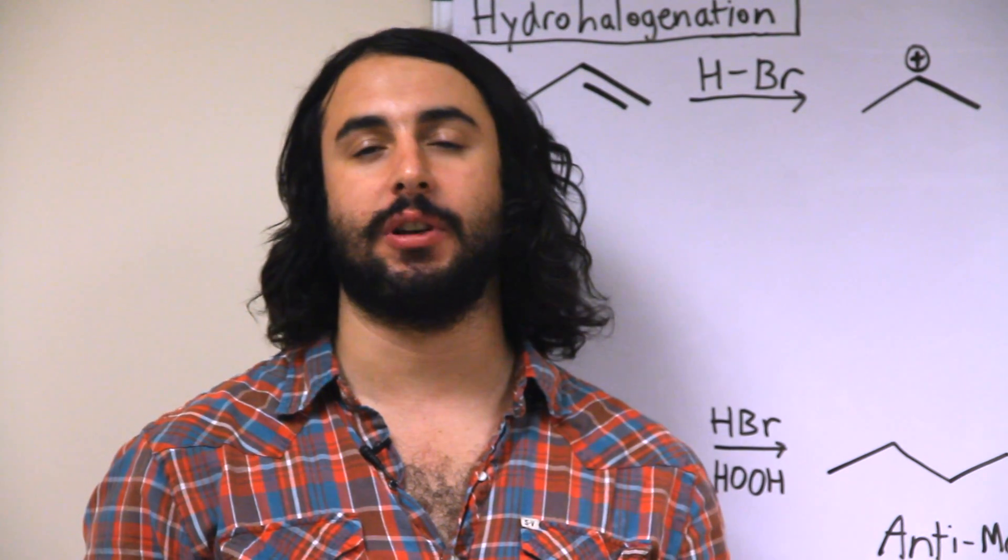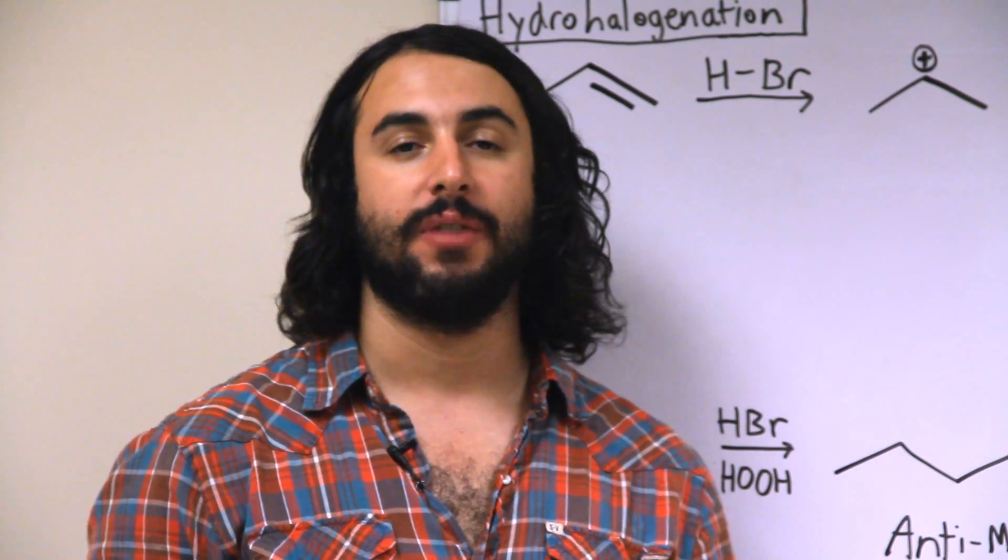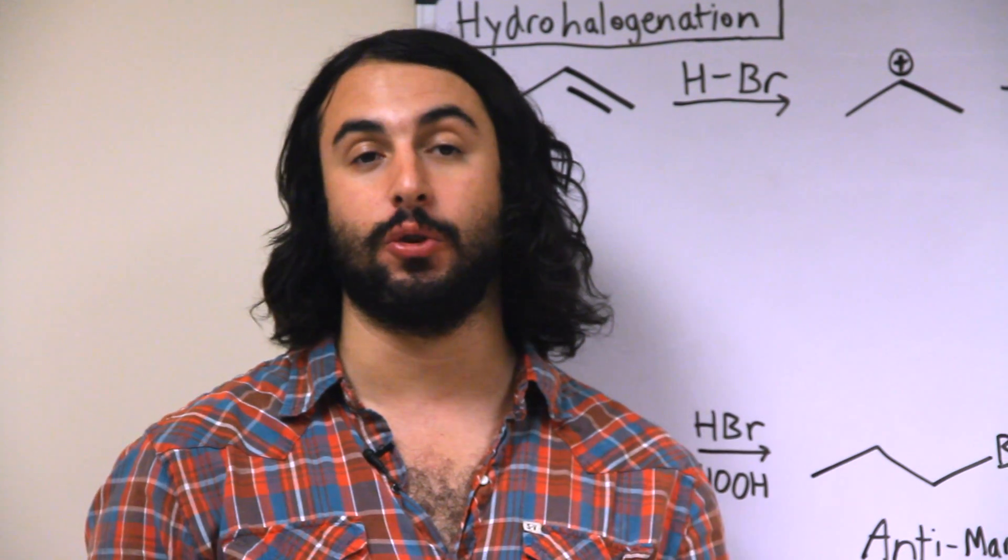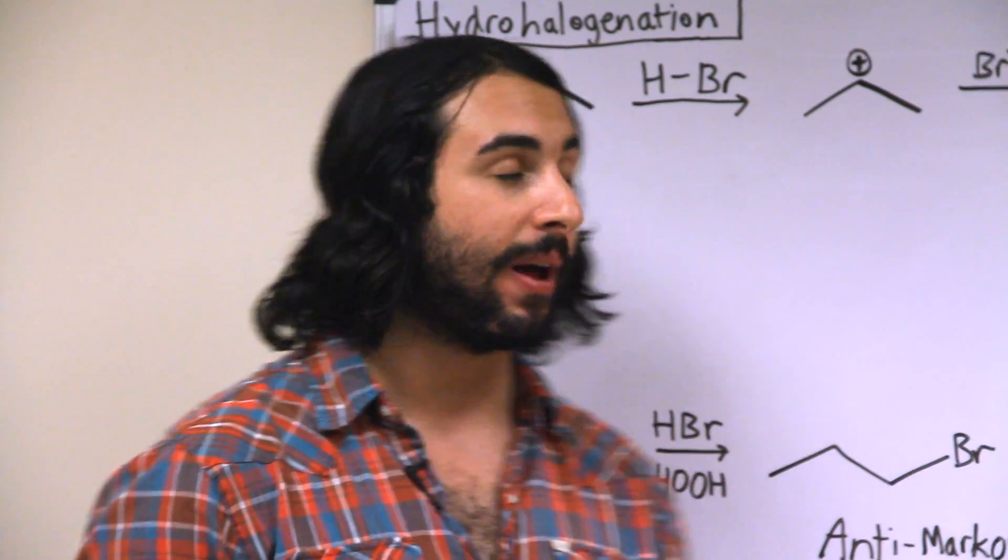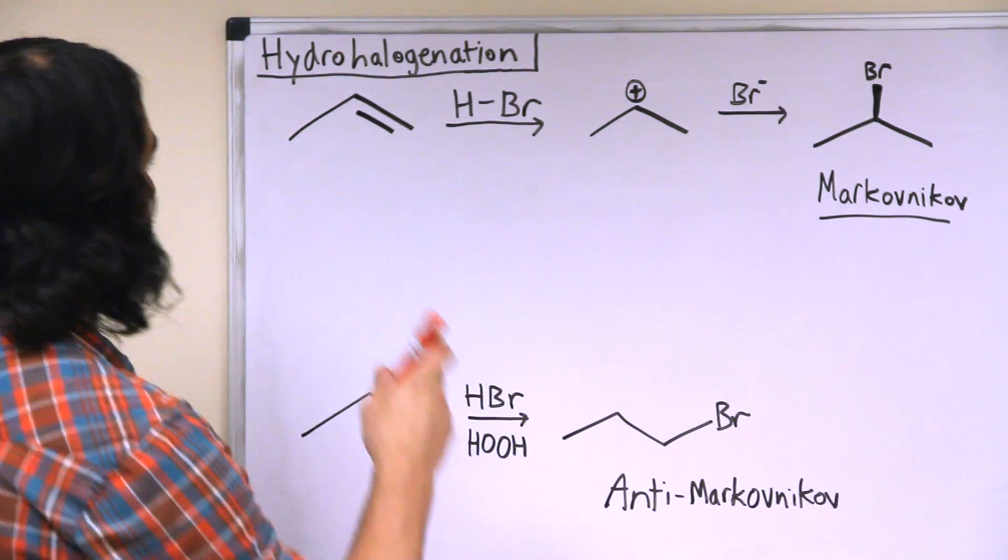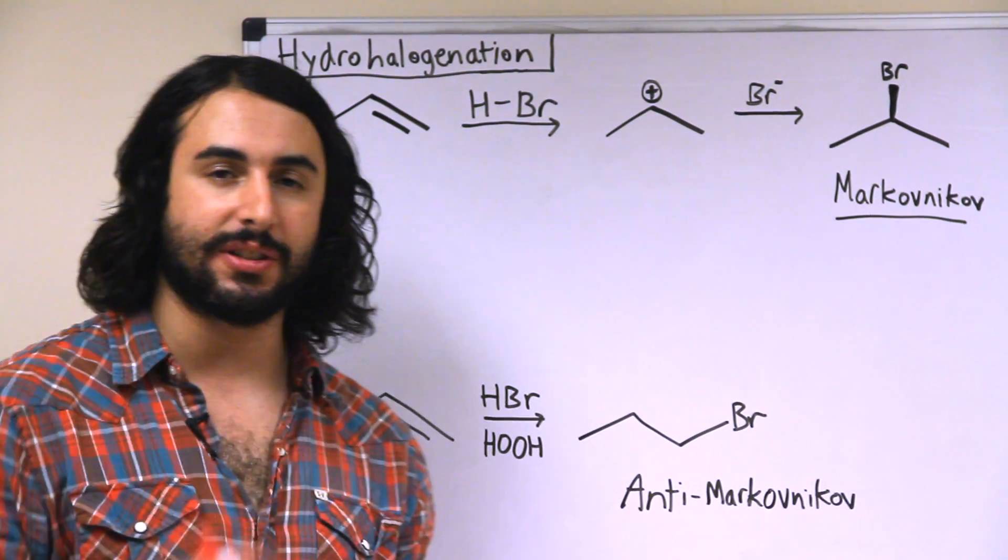The next type of addition reaction we want to look at is hydrohalogenation. From the name we could expect that it is a hydrogen and a halogen that are the two groups being added to the carbons in the double bond. So this time let's actually look at the mechanism and what we need to understand about addition reactions.